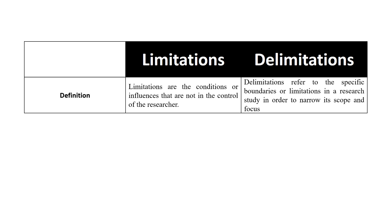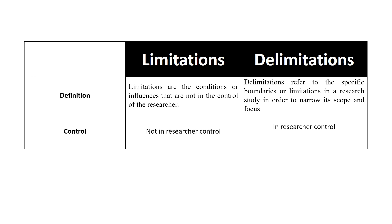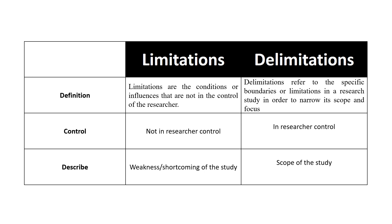In summary: Limitations are the conditions or influences that are not in the control of the researcher, representing the weaknesses and shortcomings of the study. Delimitations refer to the specific boundaries or scope of a research study, narrowing its focus — these are in the researcher's control, and represent the consciously chosen scope of the study.